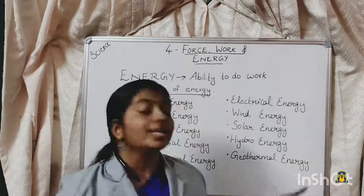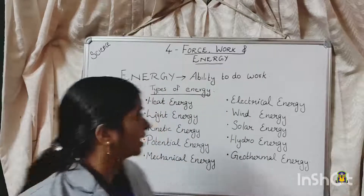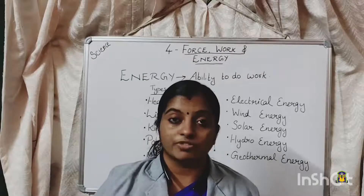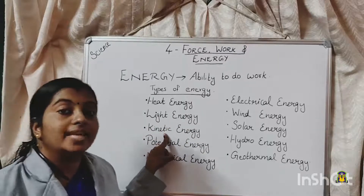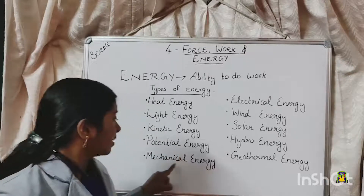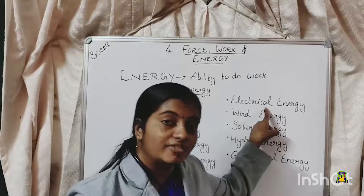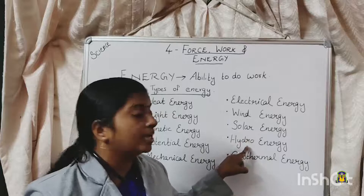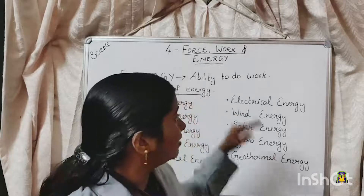So these are the different types of energy we studied today. Energy is the ability to do work. Energy can be classified into different types on the basis of the source: heat energy — from heat; light energy — from light; kinetic energy — energy possessed by a moving body; potential energy — energy possessed by an object due to its position; mechanical energy — a combination of kinetic and potential energy; electrical energy — from electricity; wind energy — from wind; solar energy — from the sun; hydro energy — from water; and geothermal energy — from the heat that comes from within the earth.